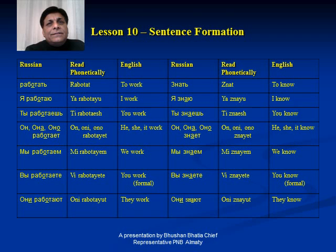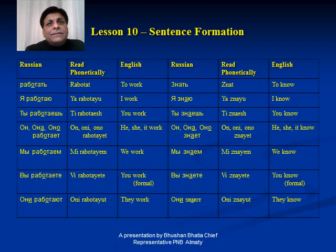Then 'On', 'Ana', 'Ano' — it will be 'Znayet'. Like it was 'On Rabotayet', here 'On Znayet', 'Ana Znayet', 'Ano Znayet' means he, she, or it knows. Then 'Mi Znayem' — we know. 'Vi Znayete' is the formal 'you know', used when speaking to seniors or elders.